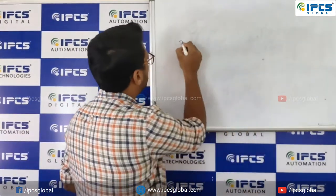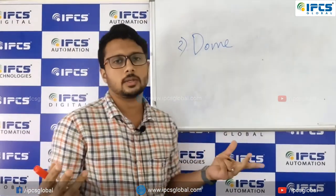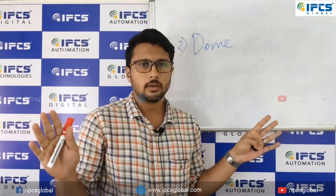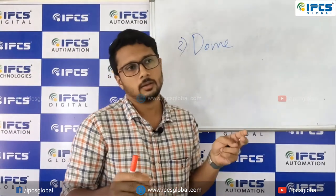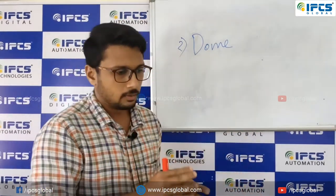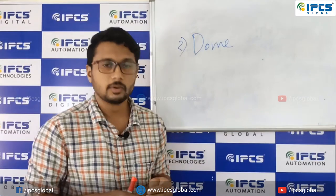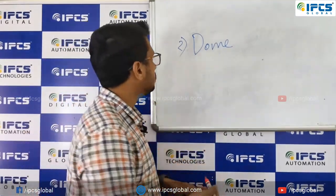The second category is dome cameras. Dome cameras are indoor cameras. In both bullet and dome cameras the internal working or anatomy is the same, but the dome does not have the housing that allows it to survive external environmental conditions. So dome cameras are suited for indoor purposes only. The dome category has two sub-types.